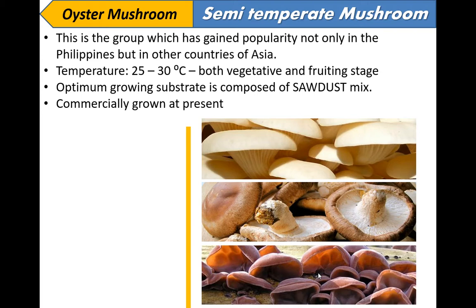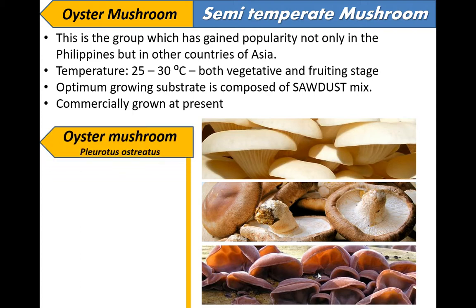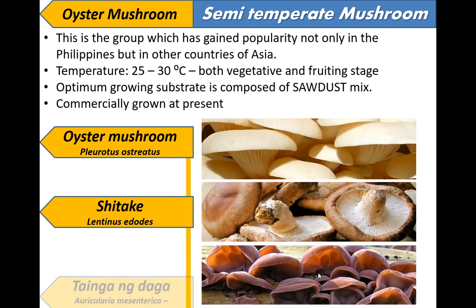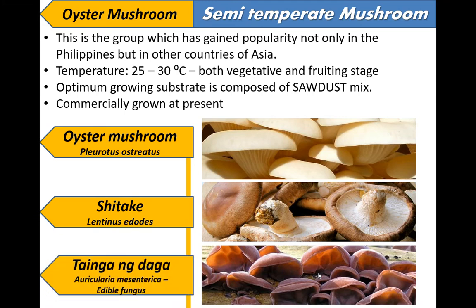They are commercially grown at present. Examples include oyster mushroom, shiitake, and tenga ng taga in the Philippines, or Auricularia mesentera.